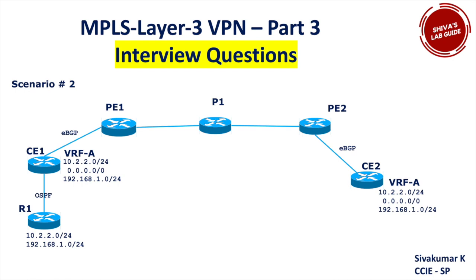In part three I have the second scenario. We have a CE router connected to PE1 and PE2, and PE2 connected to CE2. Between the CEs we have eBGP. CE1 and CE2 have eBGP. In CE2 I have a VRF with routes: 10.2.0.0, a default route, and 192.168.1.0. CE2 advertises these prefixes to PE2, then to PE1, and PE1 advertises them to CE1. In CE1's show IP route, I can see all three routes.